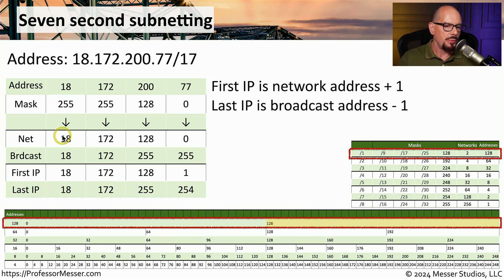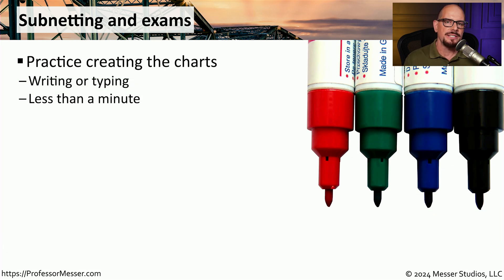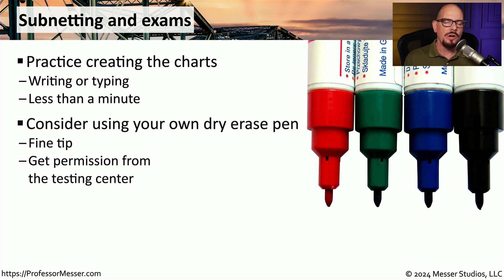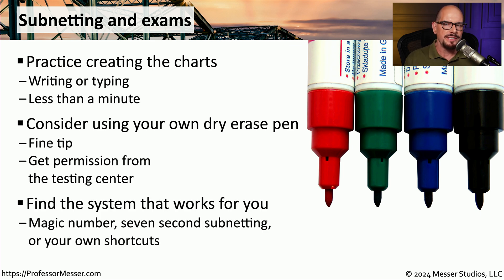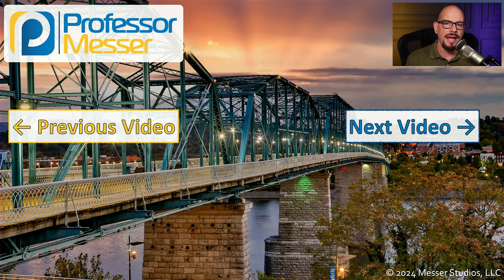To calculate the first IP address, we add one to the network address, making it 18.172.128.1. We calculate the last IP by subtracting one from the broadcast address, making it 18.172.255.254. The key to this seven-second subnetting process is being able to reference that chart. You may want to try writing it down if you're going to a testing center, or typing it into a notepad if taking the exam online. If at a testing center, check whether you can bring your own fine-tip dry erase pen. Whatever shortcut works best for you — seven-second subnetting, the magic number method, or any other — make sure to practice and use it for your exam.